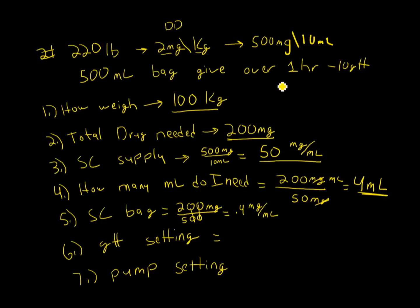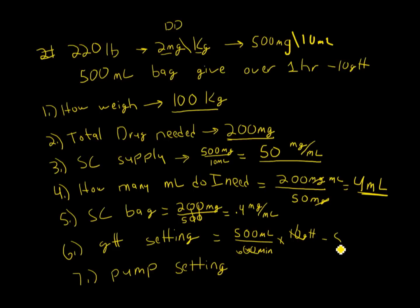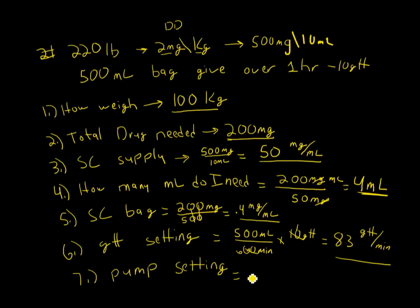Question 6: Give the bag over one hour using a 10-drop set. Amount of fluid over time in minutes: 500mL over 60 minutes, times the drop factor of 10. 10 goes into 10 once, 10 goes into 60 six times, so 500 divided by 6 equals approximately 83 drops per minute. Question 7: Pump setting — using the 10-drop set over 60 minutes gives 10 times 60, meaning the pump should be set at 500 milliliters per hour.